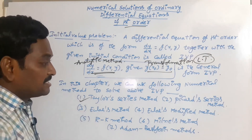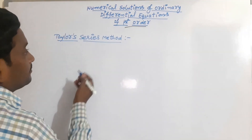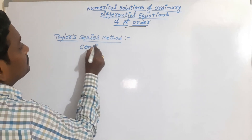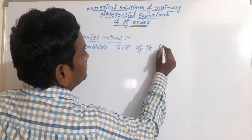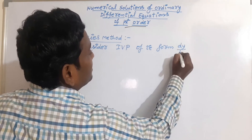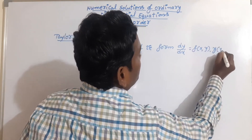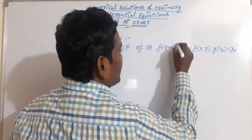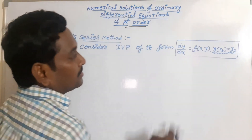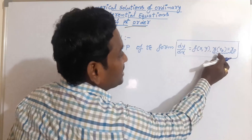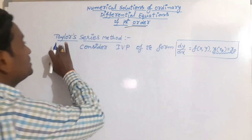Today I will explain the Taylor series method. Consider the initial value problem of the form dy by dx is equal to f of x comma y, with the initial condition y at x-naught is equal to y-naught. This is called the initial condition. The differential equation together with the initial condition is called the initial value problem. Now we are going to solve this type of initial value problem by using the Taylor series method.